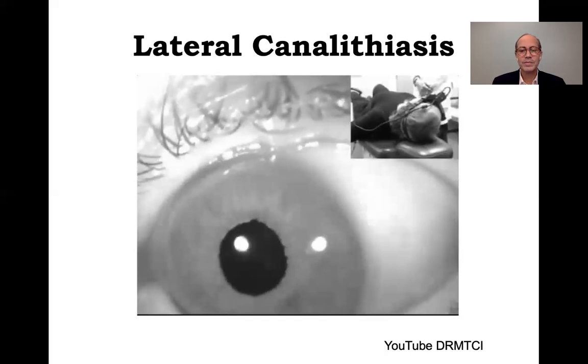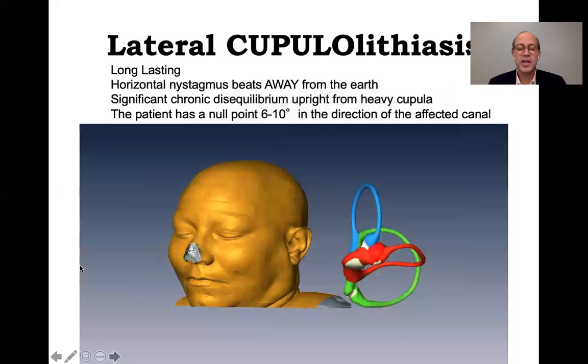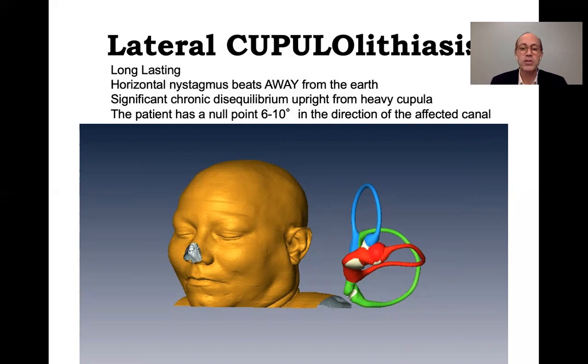We continue the supine roll test back and forth at least four times in order to decide which side is stronger. This is very important — we cannot make the decision just on the first or second pass. After four turns, you finally decide which side has the strongest response, and the direction of the stronger response is the affected side. This is important because you have to determine which side is affected for your treatment maneuver to be effective.